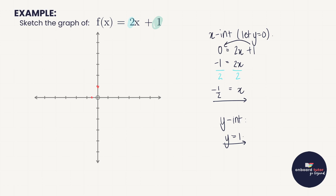Now we can use our rulers to draw the line through those two intercepts. Once drawn, it's good practice to add arrowheads and label the axes. The x-intercept at −½ should be labeled as a coordinate, and we also need to label our function — at minimum just writing the letter f next to the graph, though you can write the full equation if you prefer.